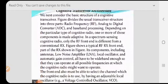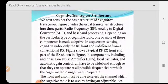This is basic building diagram of cognitive transceiver architecture. We consider the basic structure of a cognitive transmitter and receiver. Figure divides the usual transceiver structure into three parts: radio frequency part, analog to digital converter, and baseband signal processing part.